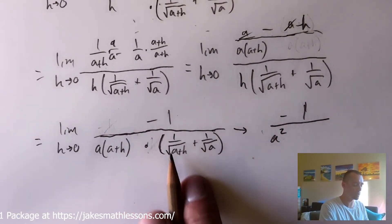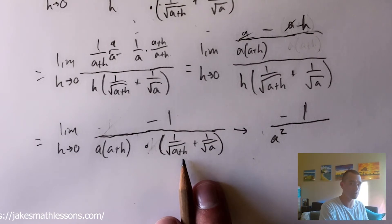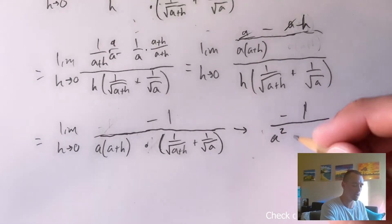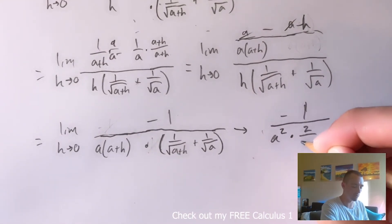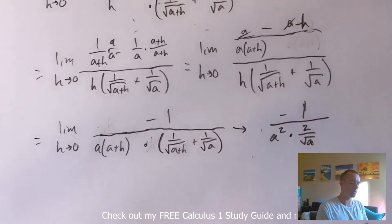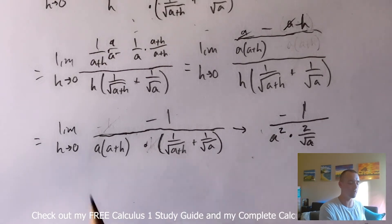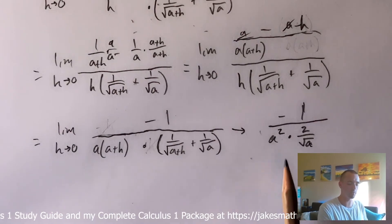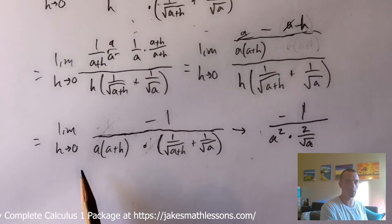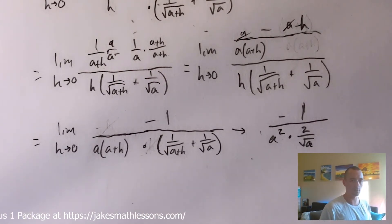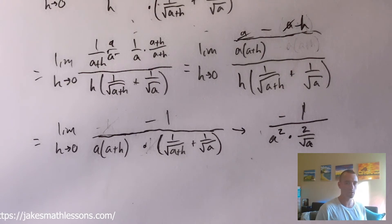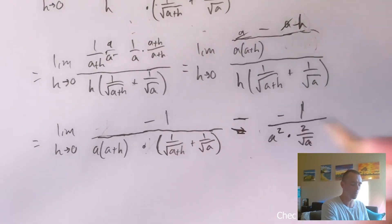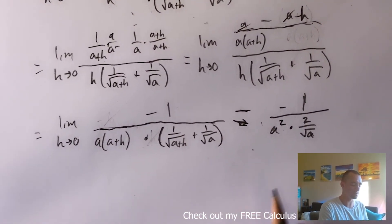Our expression is now negative one over a times a plus h times the conjugate expression in parentheses. If we plug in zero for h, we get negative one over a times a plus zero — which is just a — so a times a is a squared. And over here, we get one over square root of a plus zero, which is one over root a, plus one over root a, giving us two over root a. So we can evaluate this limit as h goes to zero without ever dividing by zero — this gives us an acceptable result.